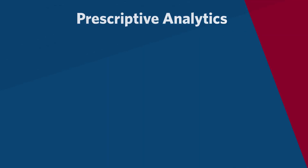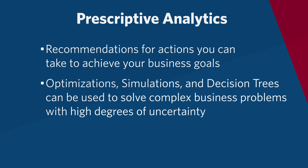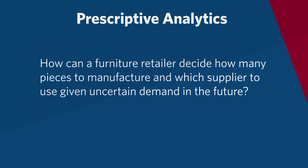And finally, we'll look at prescriptive analytics, which focuses on recommendations for actions you can take to achieve your business goals. You'll learn how optimization, simulations, and decision trees can be used together to solve complex business problems with high degrees of uncertainty. For example, how can a furniture retailer decide how many pieces to manufacture and which supplier to use given uncertain demand in the future?